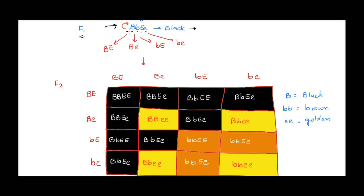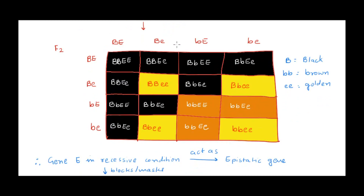In the F2 generation, we cross the F1 types. The gametes we get are: capital B capital E, capital B small e, small b capital E, and small b small e. It is always recommended that you draw the Punnett square — it might look a little tedious but it makes it very easy to understand and avoids confusion. You can write the phenotype in the corner of each box.